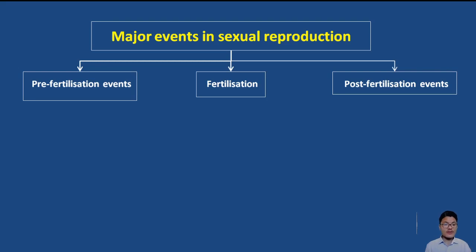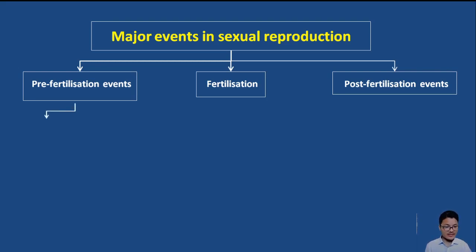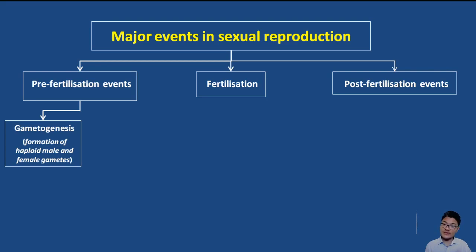What are the pre-fertilization events? Before fertilization, gametes have to form, and two different gametes — male and female — have to be transferred or come together. The first pre-fertilization event is gametogenesis. 'Gameto' refers to gametes, and 'genesis' refers to production or generation. So gametogenesis is the formation of male and female gametes. Both male and female gametes are haploid, having half the number of chromosomes.